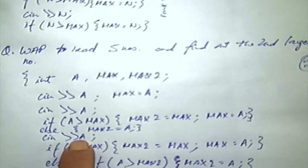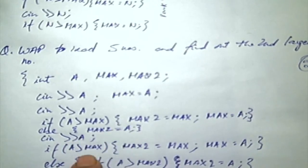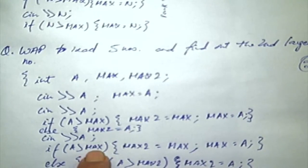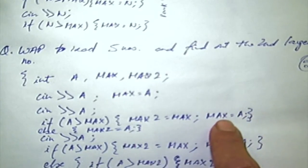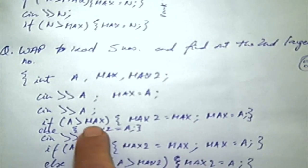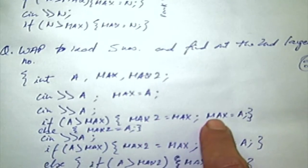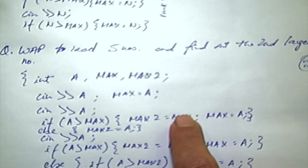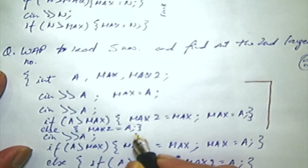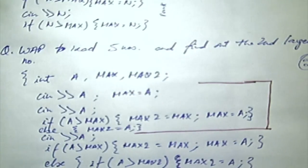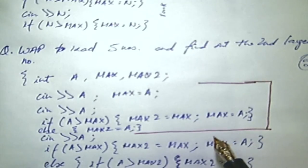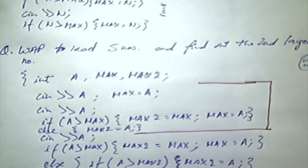Next he reads another number and applies exactly the same logic. If this number is greater than max, the old max becomes max two and the new number becomes max. If that is not so, then the new number becomes max two. But wait — if A is not greater than max, does it imply that A is greater than max two? This part is like an initialization. After reading the next number, he checks if it is greater than max. If so, max and A shift to max two and max respectively. Else, he checks if A is greater than max two. If so, A is put into max two. Otherwise A is ignored. He is using the same logic, except with two locations.